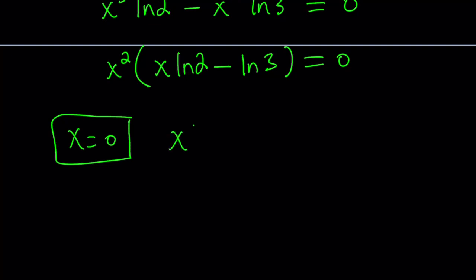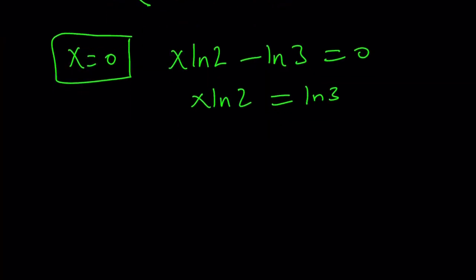The second solution comes from this equation. If you add ln 3 both sides and divide by ln 2, you get x equals ln 3 over ln 2 as our second solution.